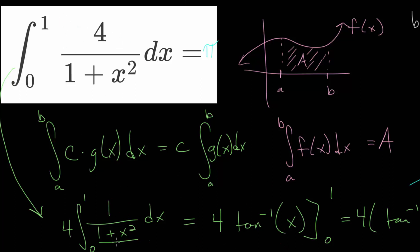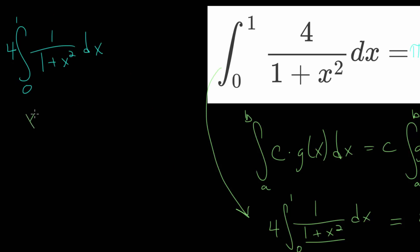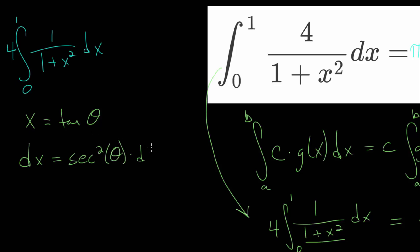To solve this in a different way, we can rewrite the integral as 4 multiplied by the integral from 0 to 1 of 1 over 1 plus x squared dx, and make a trigonometric substitution. We say that x is equal to the tangent of theta. We need to rewrite this integral in terms of theta, so taking the derivative of each side: dx equals the secant squared of theta d theta.